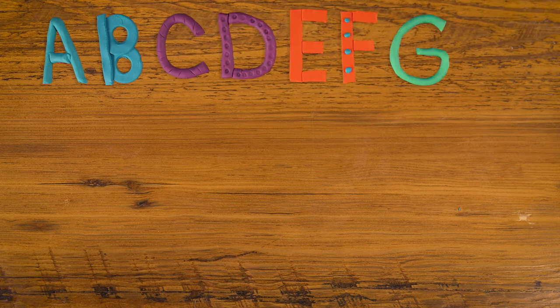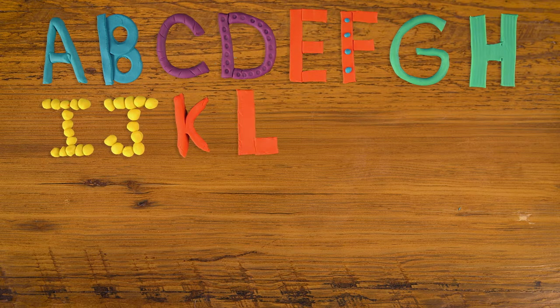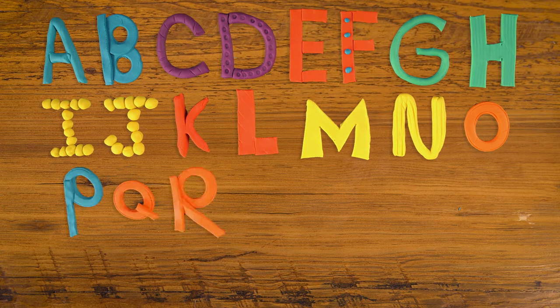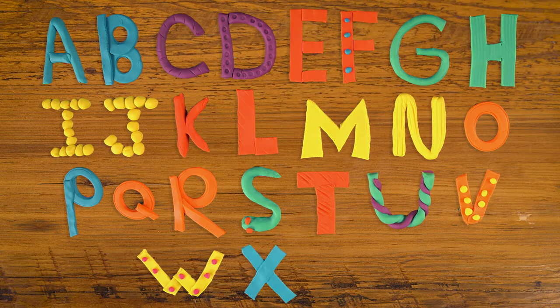If your child is learning their ABCs, making the alphabet out of Play-Doh or modeling clay is a great activity to help them learn. It's fun and easy. I'll show you how.